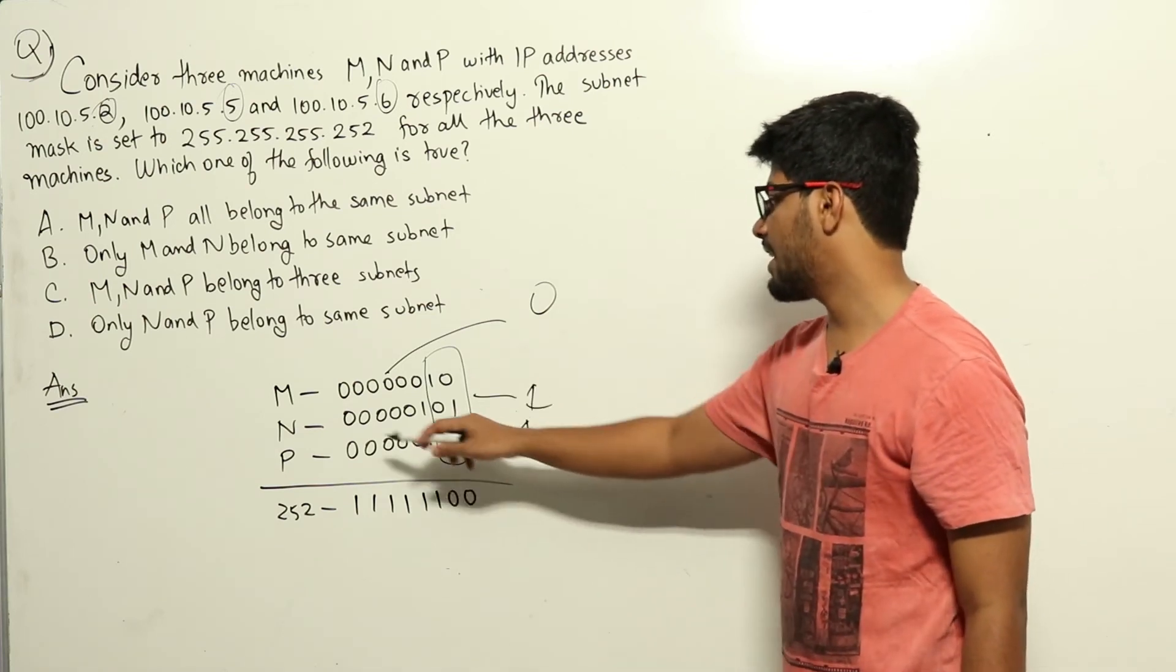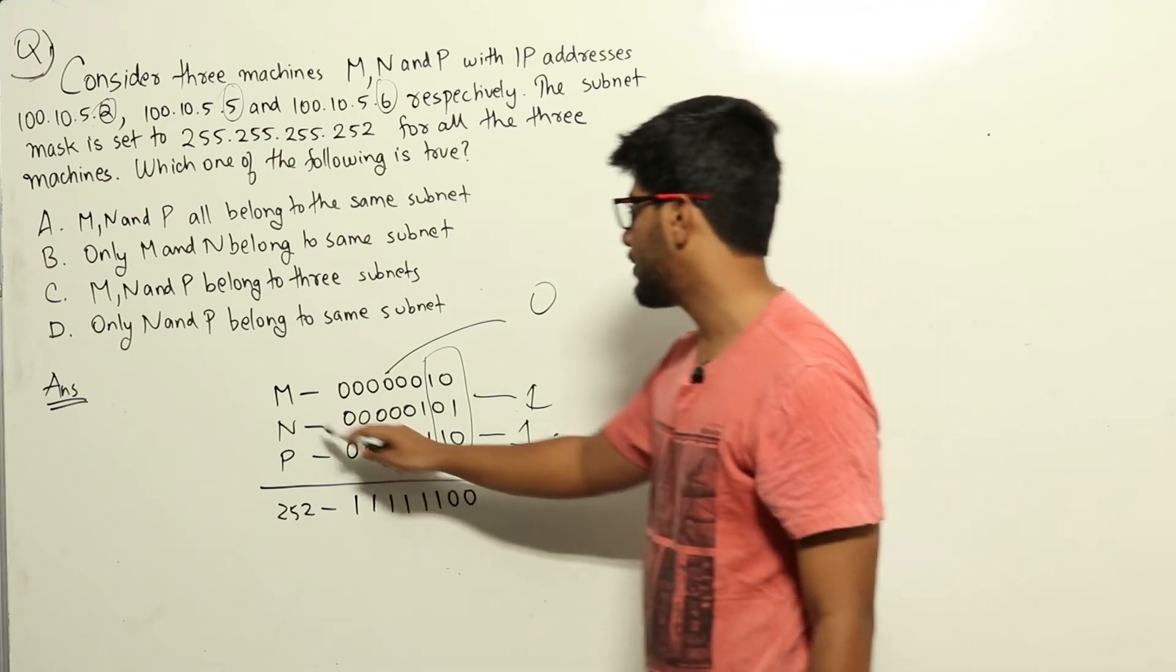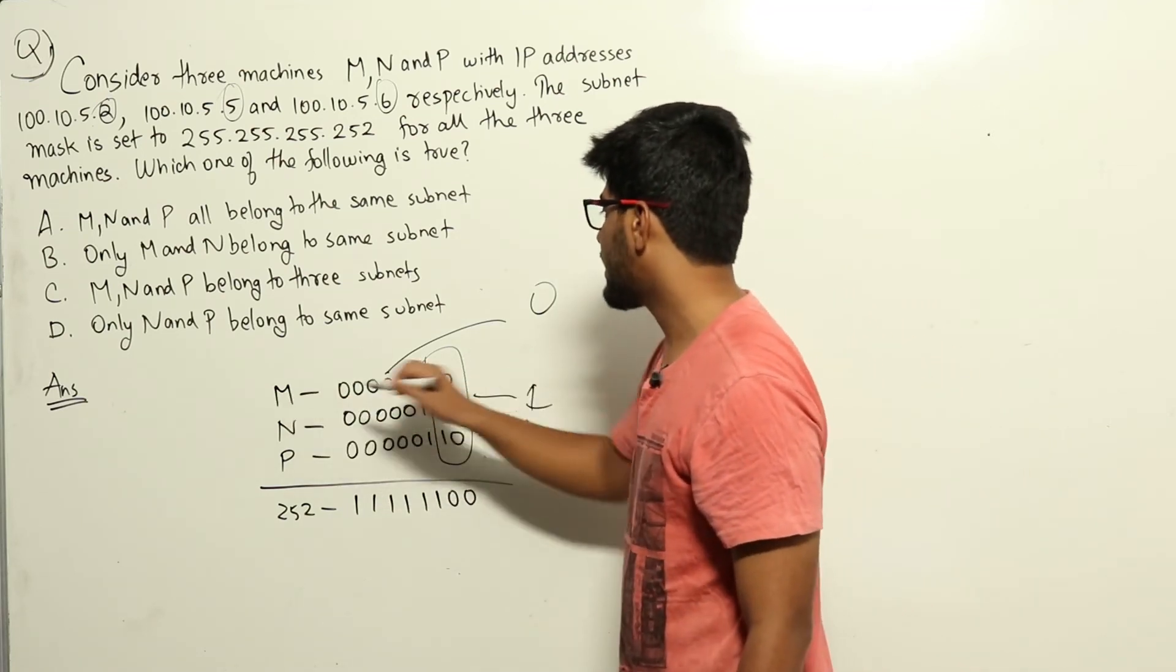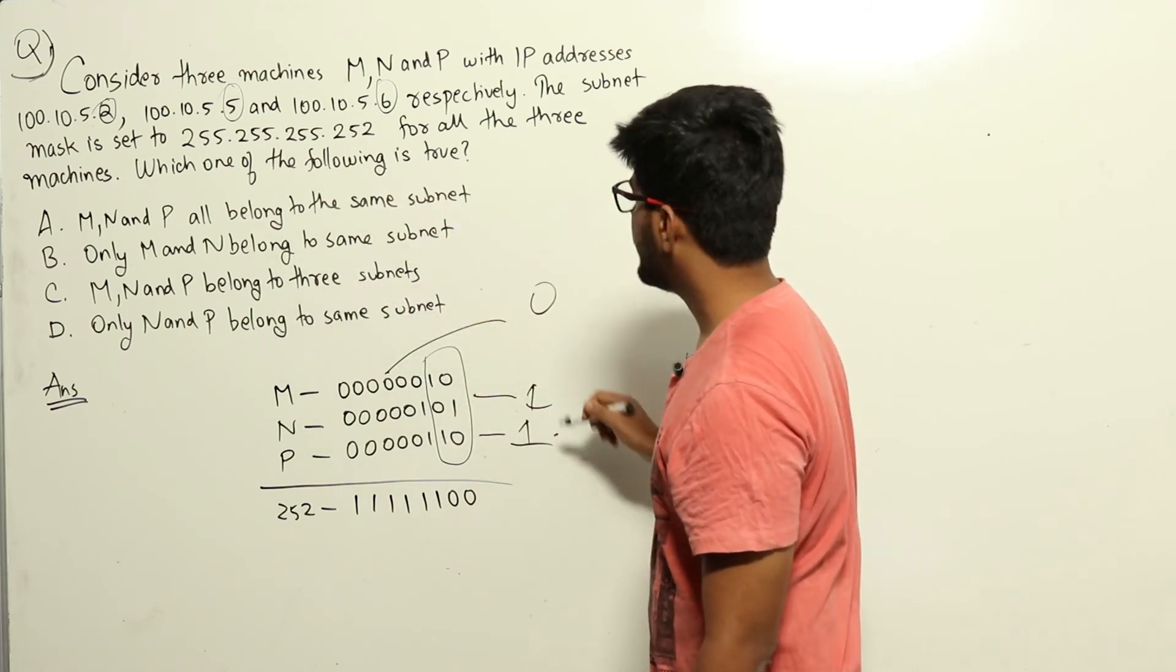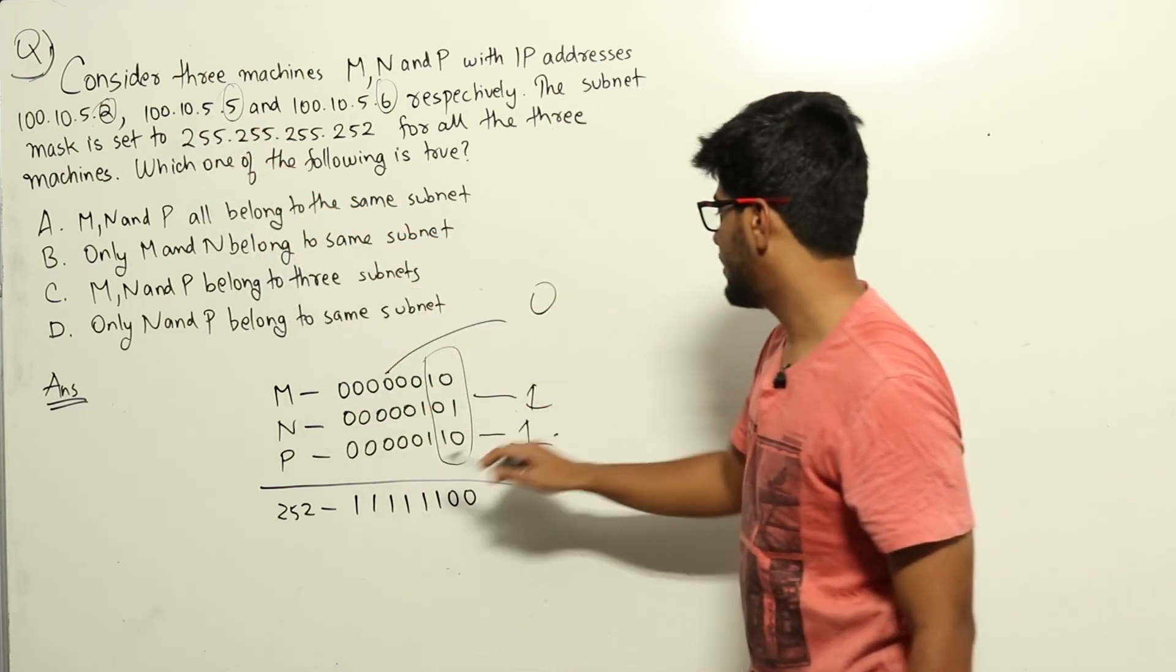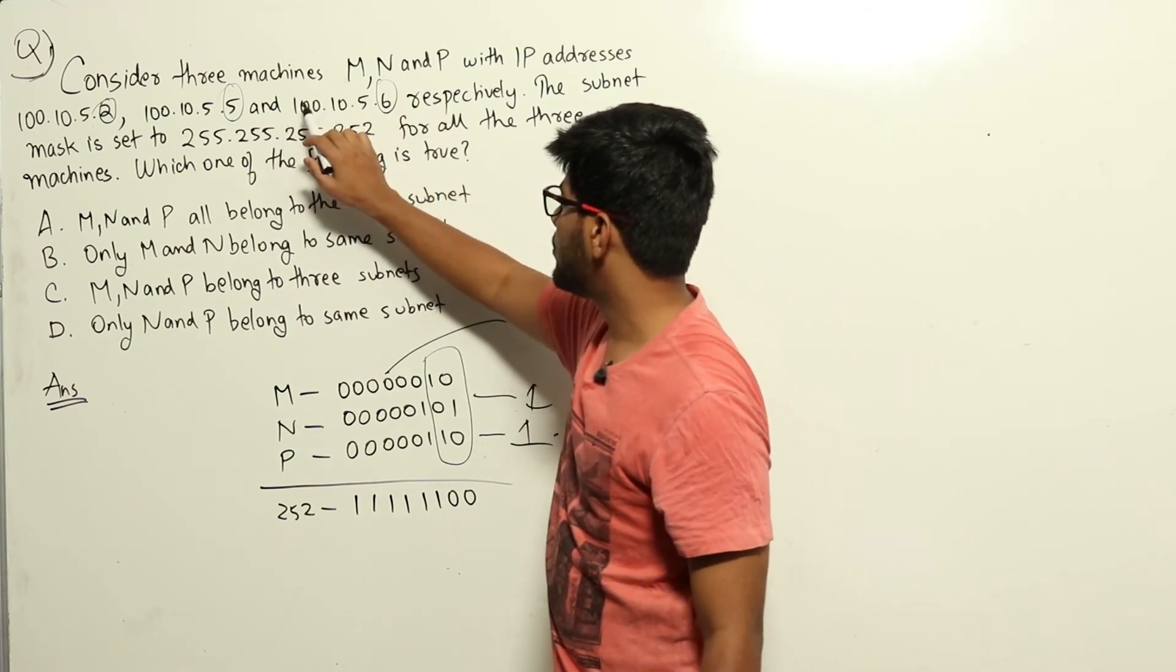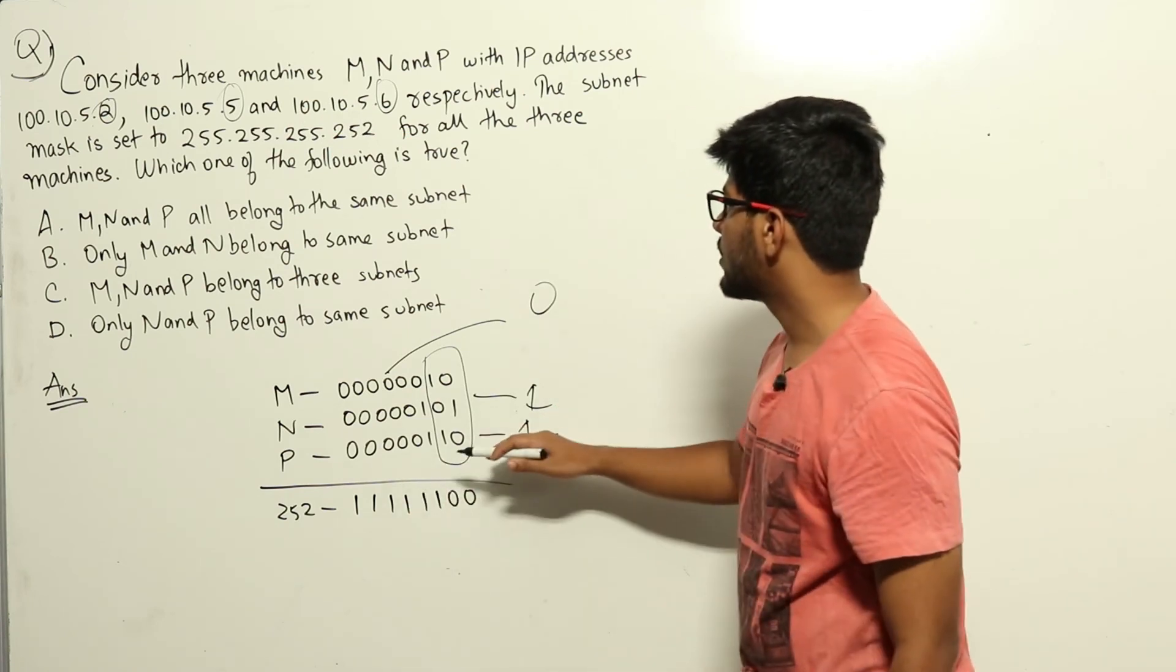As you can see, N and P will have the same subnet. M will have a different subnet compared to N and P. M's network ID will be 100.10.5.0. And N's network ID would be 100.10.5.1. Similarly, P's network ID would be 100.10.5.1 as we got here.